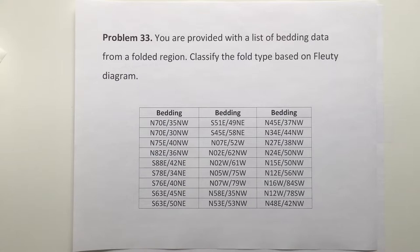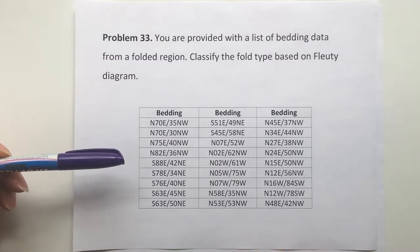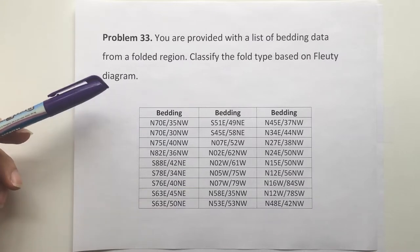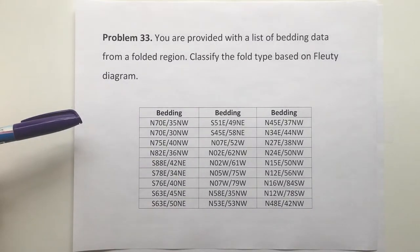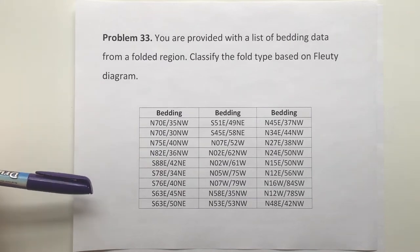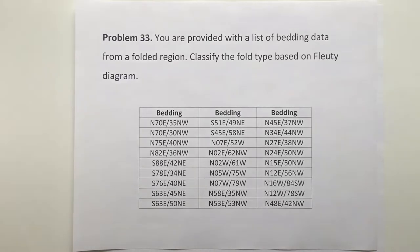On this problem we have more data. As you can see, you are provided a list of bedding attitudes with the strike and dip. In field work and field data analysis, normally you should measure more data as this table shows, rather than only two attitudes. We're going to go ahead and plot this and show how you can come up with the geometry of the fold.